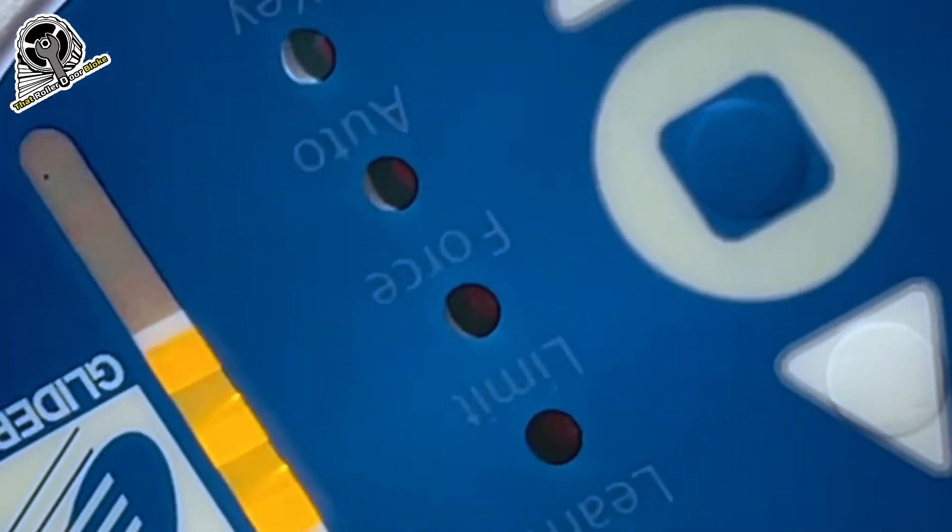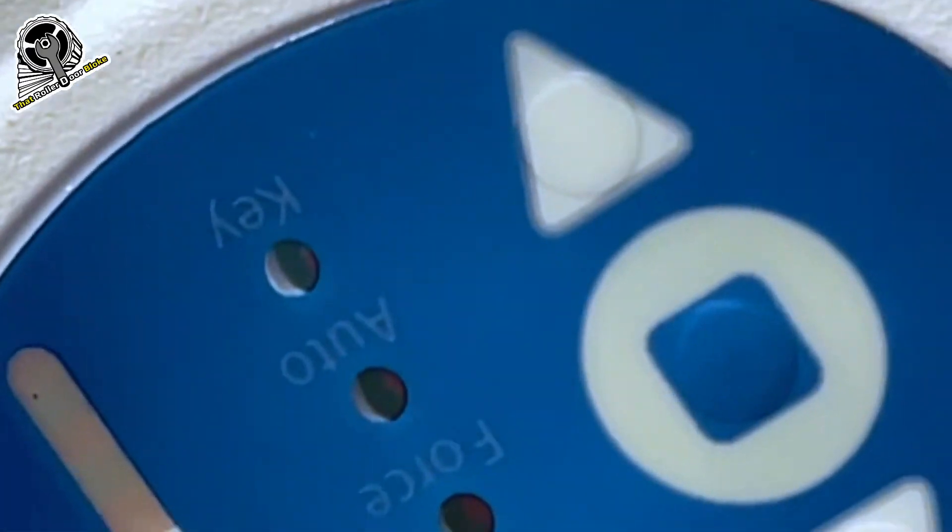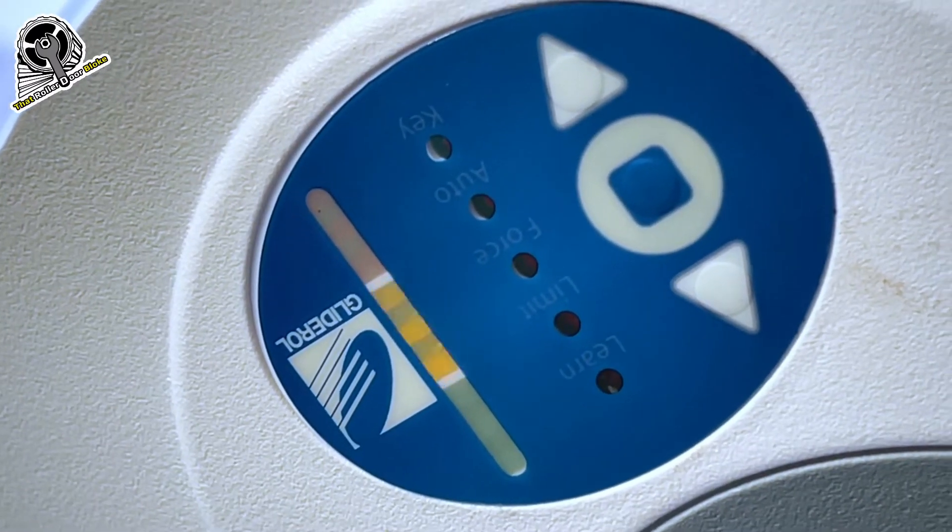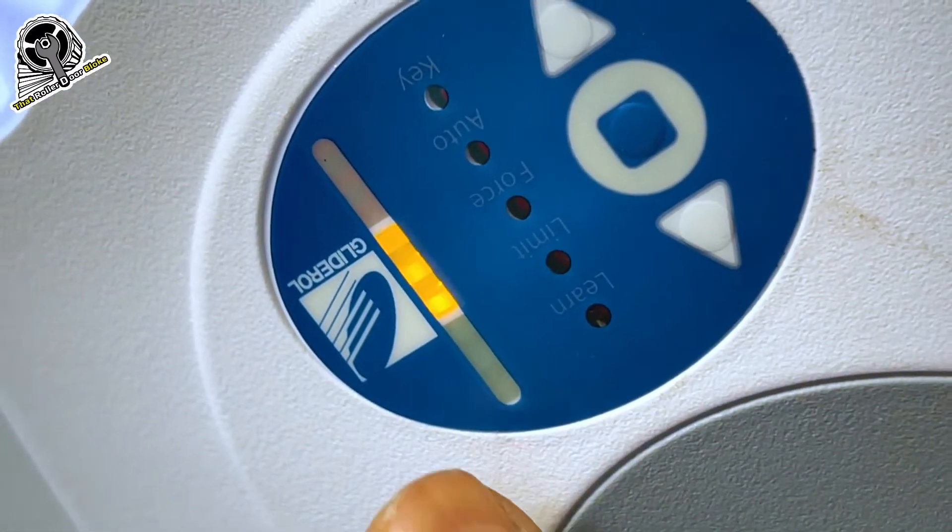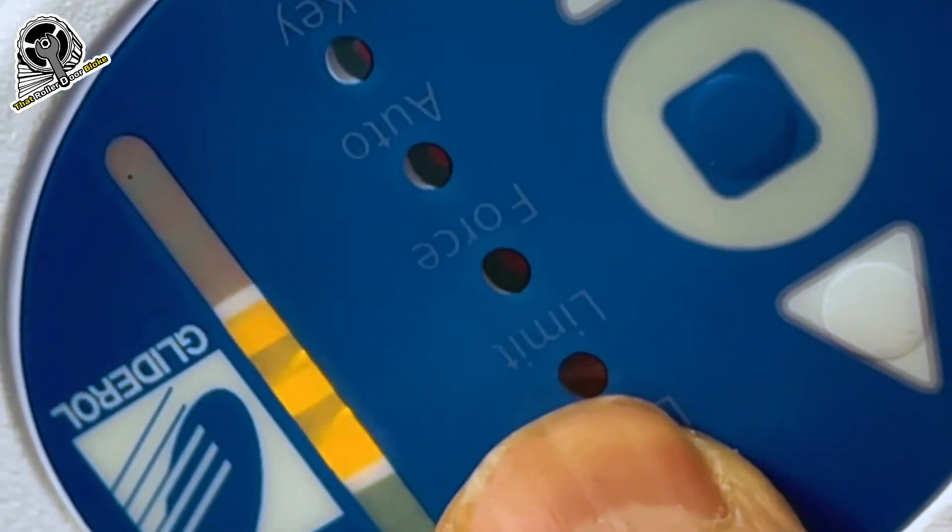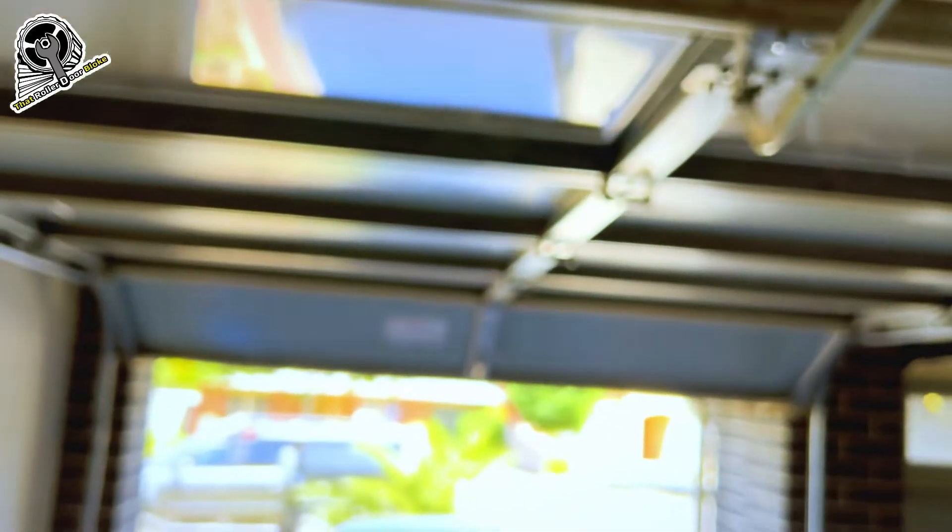All right, so these are the controls. We've got learn, limit, force, auto, and key. We might go through those in another video. So the setting we want is limits to do our limits. The door is currently up at the moment.